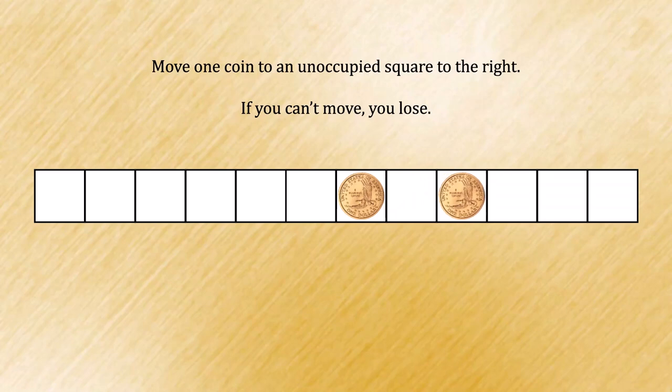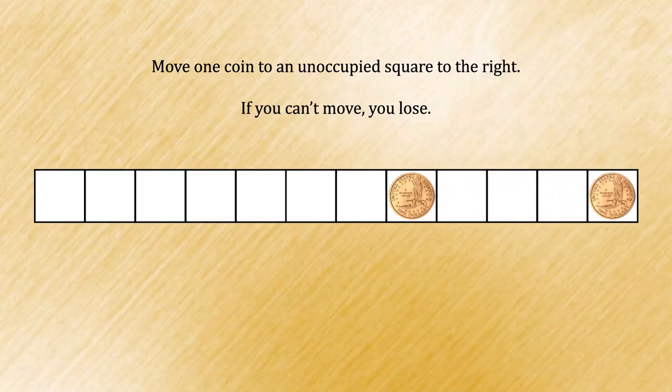On my turn, I could begin making progress with the other coin by moving it one space. On your turn, you could move the rightmost coin all the way to the end. And then on my turn, I could move the other coin to the second to last spot.